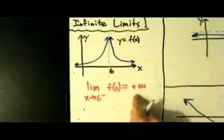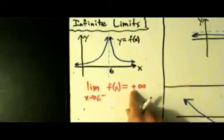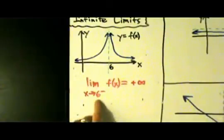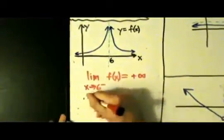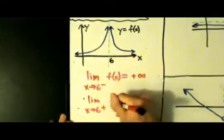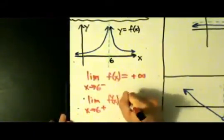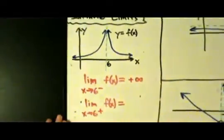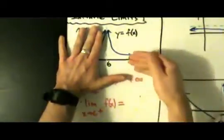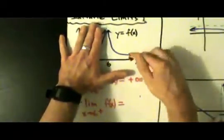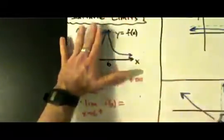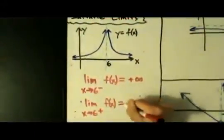Is the plus sign necessary? Not really, but it's good to have just to be clear. So that's if we come into 6 from the left. What if we come in from the right? The limit as x approaches 6 from the right of f of x equals what? Well, now we're coming in from the right, so we're going to cover up the left. We don't care what's happening on the left. So if we come into x equals 6 from the right, where are the y values going? They're shooting up to positive infinity. So this is also positive infinity.